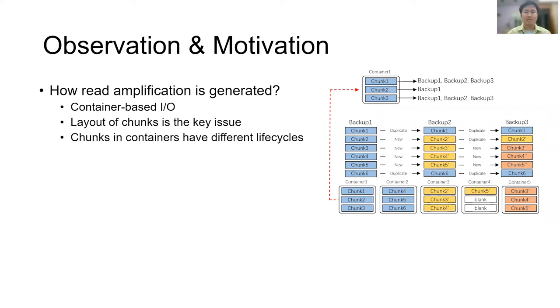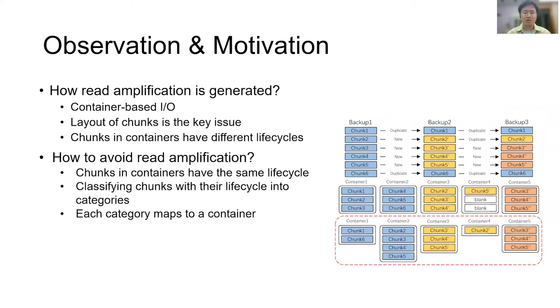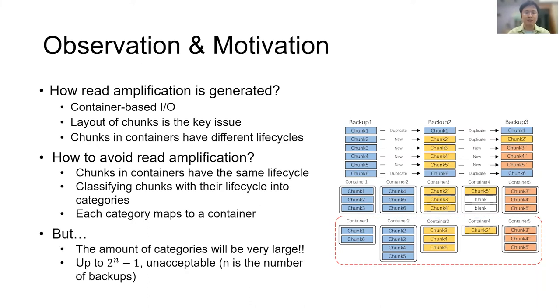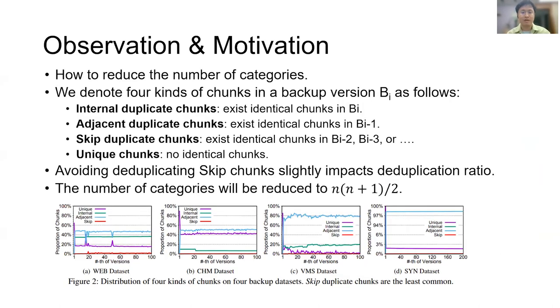Thus, we can give another data layout like that one. We classify chunks into categories according to their life cycle. In this data layout, backups consist of several containers. No matter which backup you want to restore, there is always no unutilized chunk included in involved containers, which means no read amplification. It seems good, but the number of categories will be huge if we apply this classification. I can't imagine what a number it will be when n ups to 100 or more. Thus, the next question is how to reduce the number of categories.